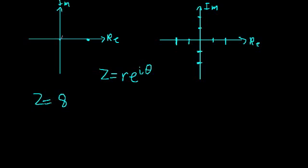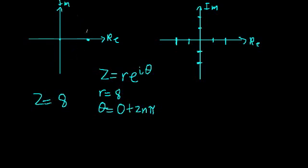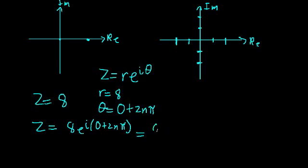Here's the real axis. We can say z equals 8 is right here. We know that the radial distance from the origin to that point, r, is just equal to 8. And we know that the angle this point makes with the x-axis, theta, is just equal to 0 plus 2n pi. Because if we add any integer multiple of 2 pi, we keep landing at this same point. So we write z equals 8 e to the i times 2n pi.